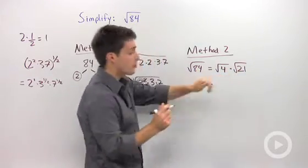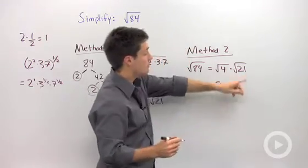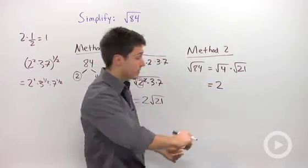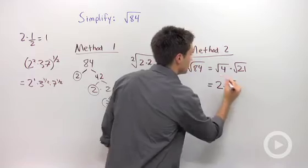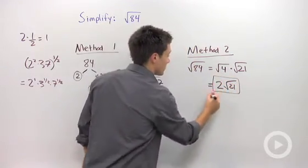And then you can say, well, the square root of four is just two, and the square root of twenty-one, I can't factor any more, and there is no whole number square root. So your answer is two times the square root of twenty-one.